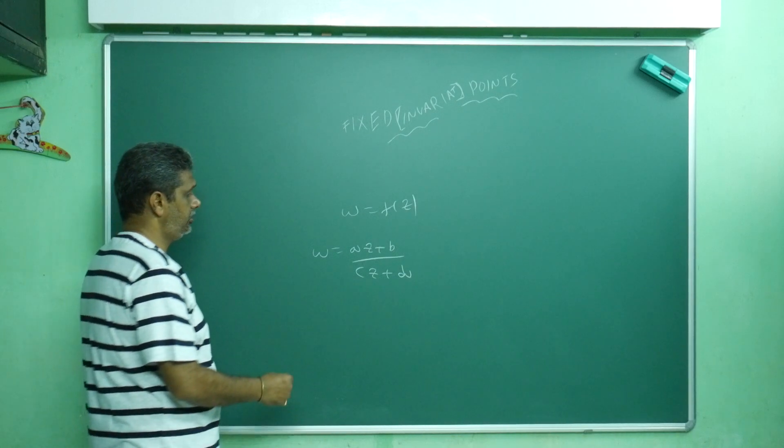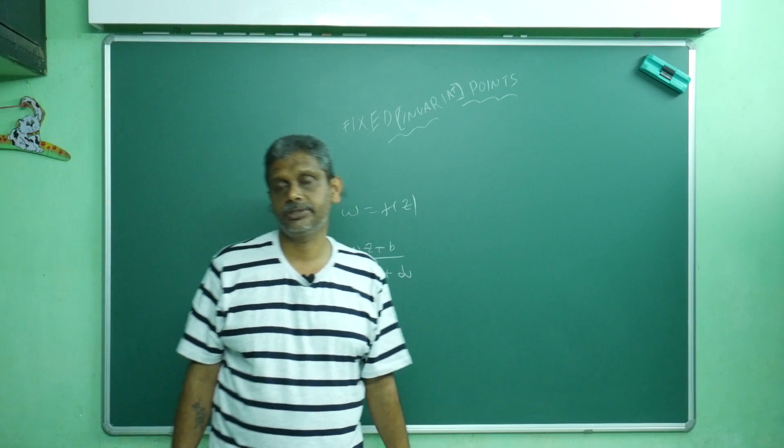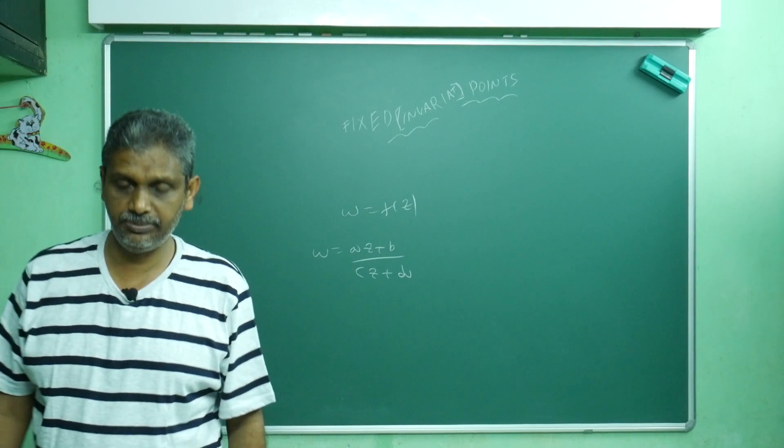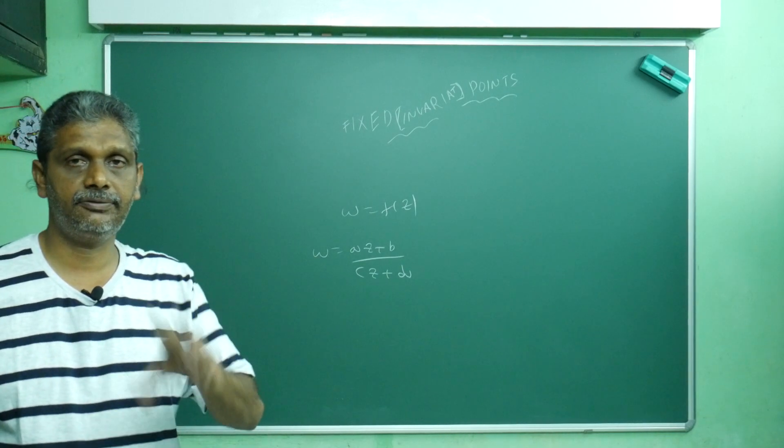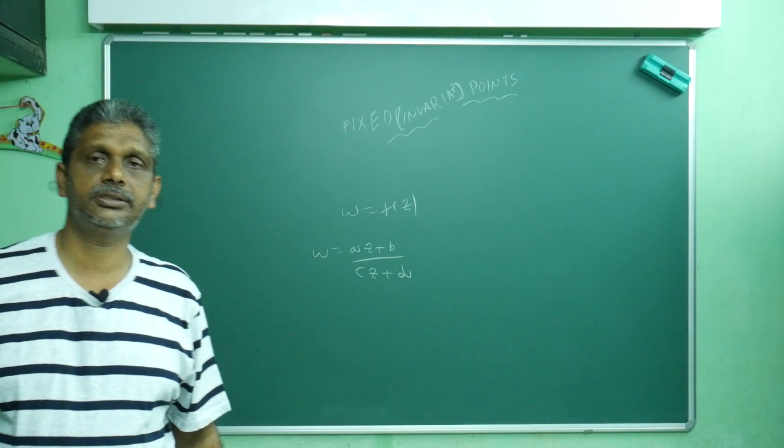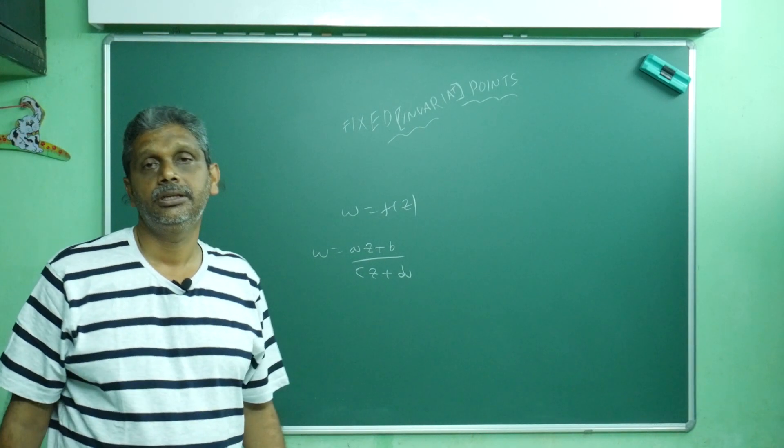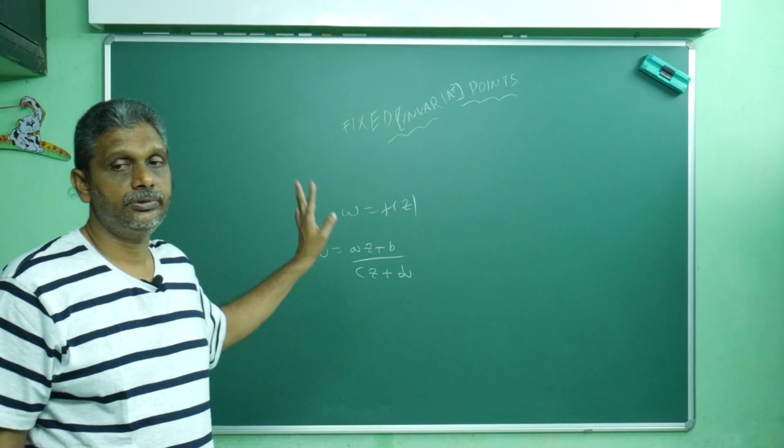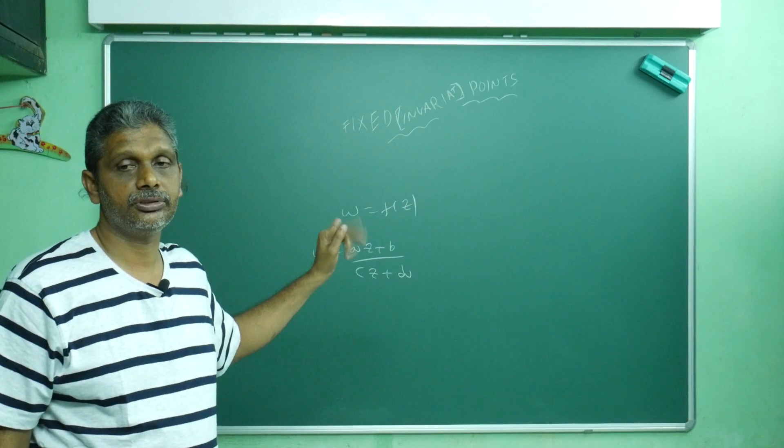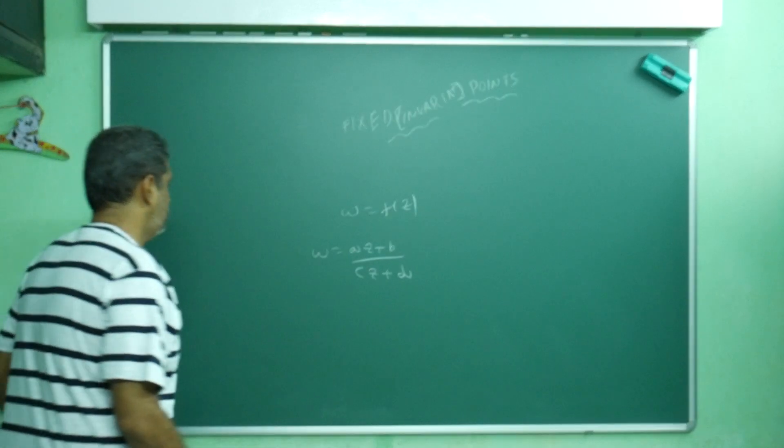Put w equals z. In examinations, they may ask small questions, maybe four marks or two marks depending on your university pattern. They will guarantee ask one question: find the fixed point or invariant points for the bilinear transformation w equals az plus b divided by cz plus d. Then what you will do is put w equals z and solve.